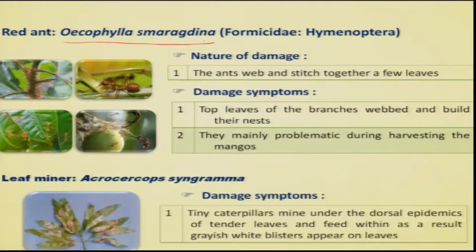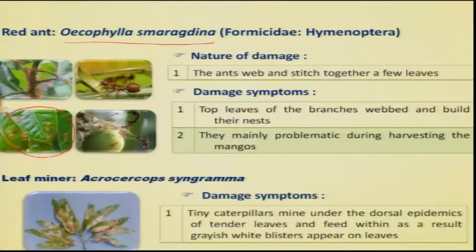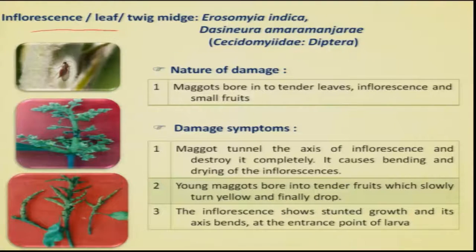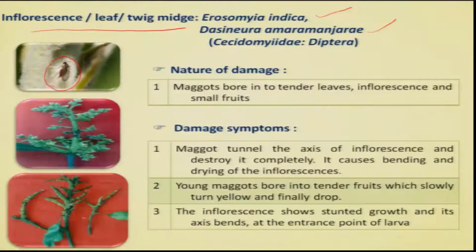The red ant, Oecophylla smaragdina, is considered a pest not because it causes direct damage, but because its presence in the orchard is a nuisance — it constructs large nests by webbing the leaves and is quite ferocious, interfering with the harvesting process. The inflorescence midge has two species, Erosomyia indica and Dasineura amaramangiferae, which attack the inflorescence. The mosquito-like adult inserts eggs into the developing embryo of the flower, causing the entire inflorescence to be affected and resulting in no fruit set.